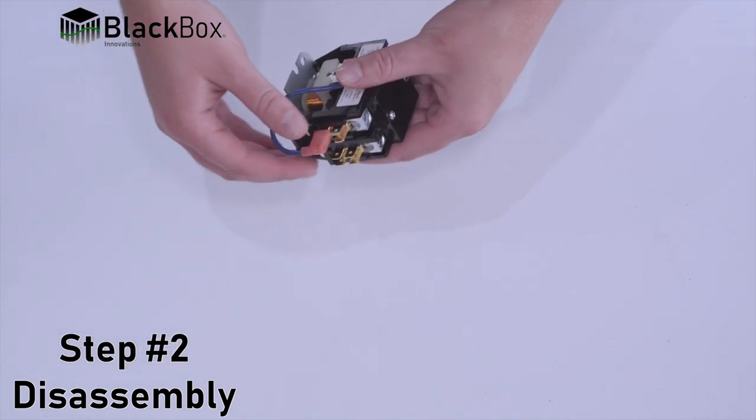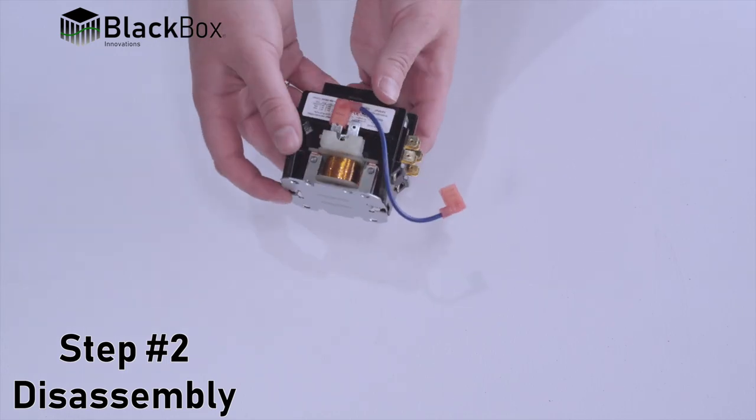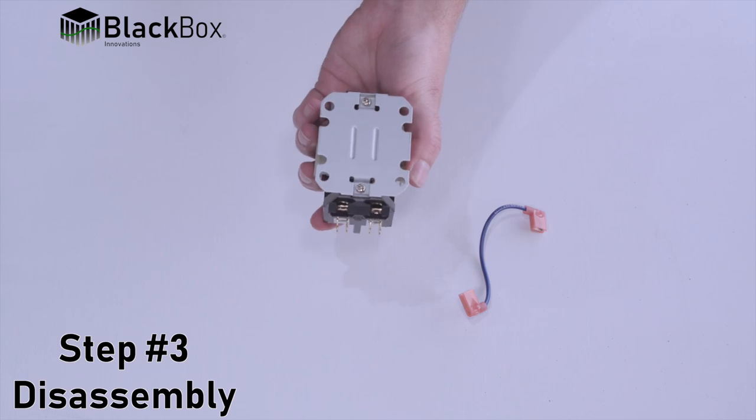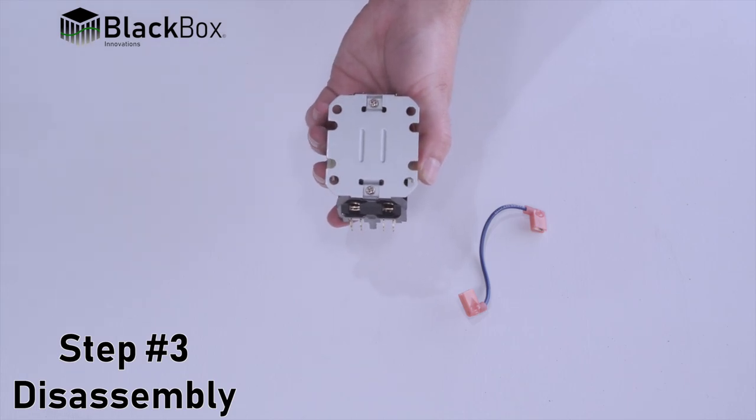Step two, disconnect blue jumper wire from both points on contactor. Step three, flip contactor over to access the base mounting plate located on the bottom of the contactor.